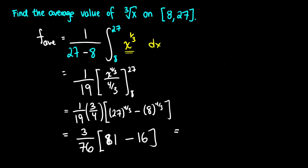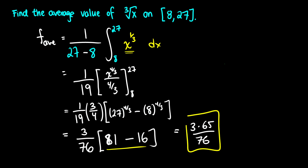Our end result is 3 times 65 all over 76, where 65 comes from 81 minus 16. So this is the average value of x to the cubed root on the interval from 8 to 27. You can easily verify this by plugging it into Wolfram Alpha — it has an average value function and you can see the graph, so any free site that does those calculations can help you verify your answer.